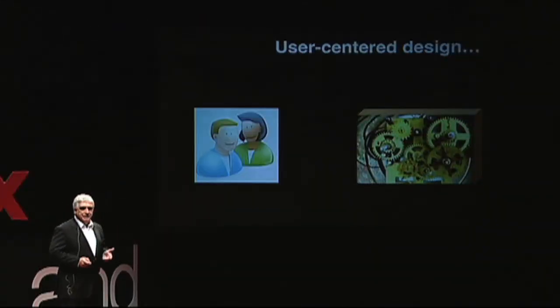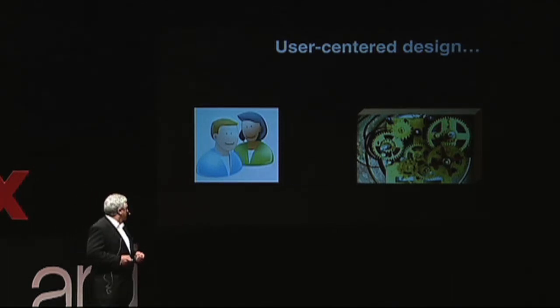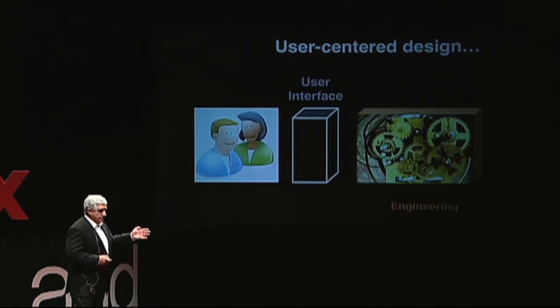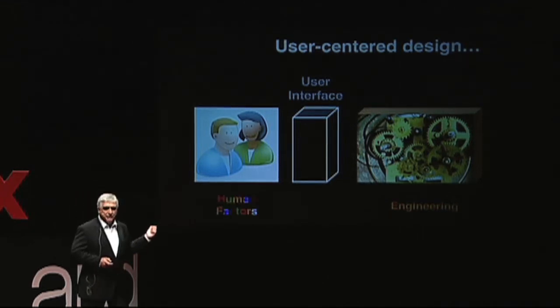It is because first we design a machine, and then we realize that there are people who will be using this machine. And so we design a user interface in between. Sometimes we oppose the world of engineering to the world of human factors — which includes many disciplines: psychology, physiology, sociology, ergonomics. I would like to demonstrate that this approach is wrong.